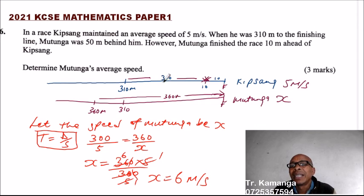So that's how you'll get the speed of Mutunga. Excuse me, what you have been tested here is whether you know how to calculate speed and then you should be able to make your argument here to be able to find out the time taken for Mutunga to cover this distance. You have to identify the distance covered by Kipsang, by Mutunga, when Kipsang was 10 meters to the finishing line. And by doing that, you'll be able to get 3 marks.